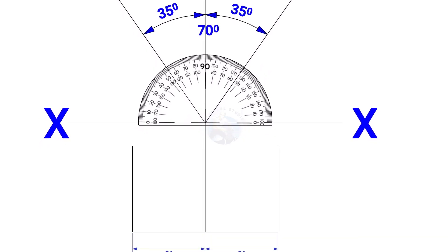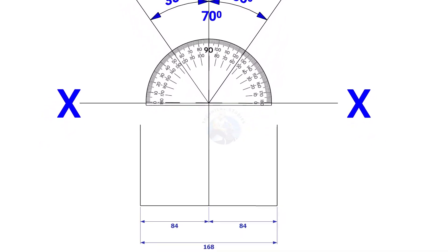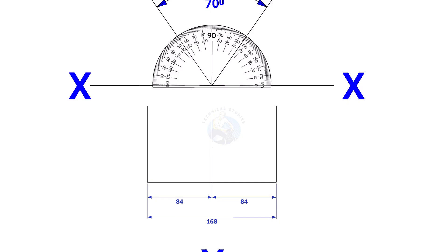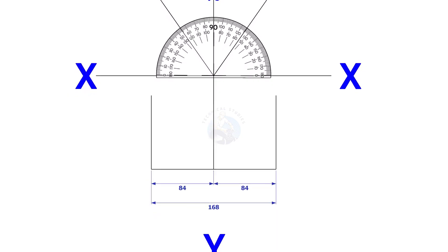Mark 84mm each on both sides of the YY axis, that is the outside diameter of the header. Draw perpendicular lines on these marks as shown.